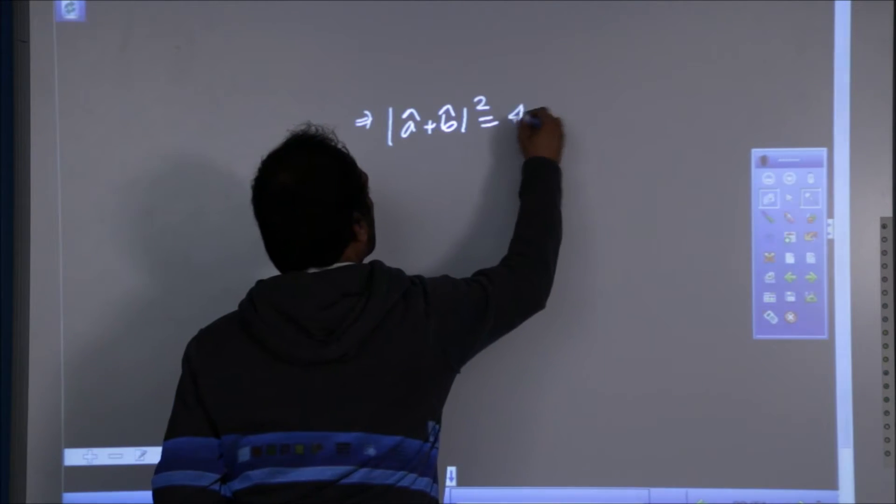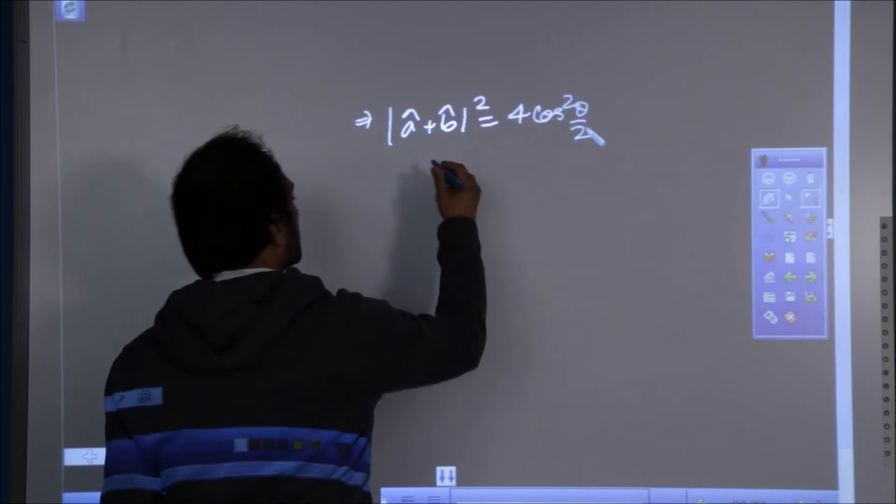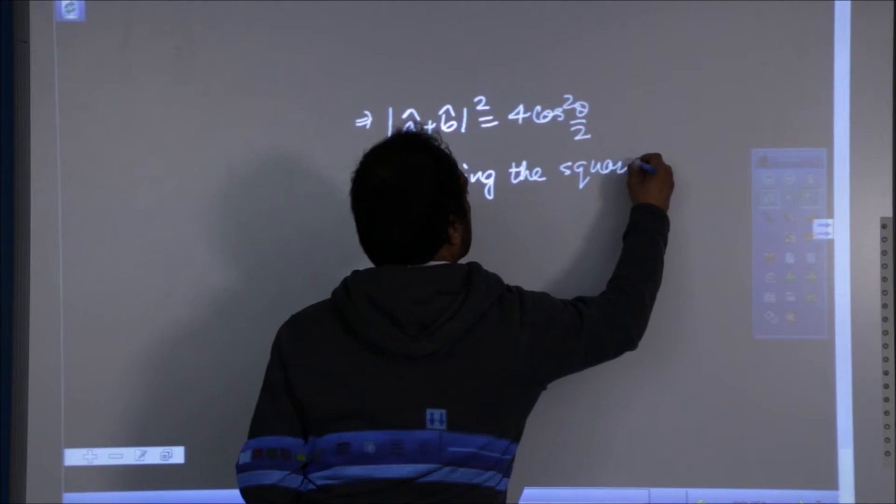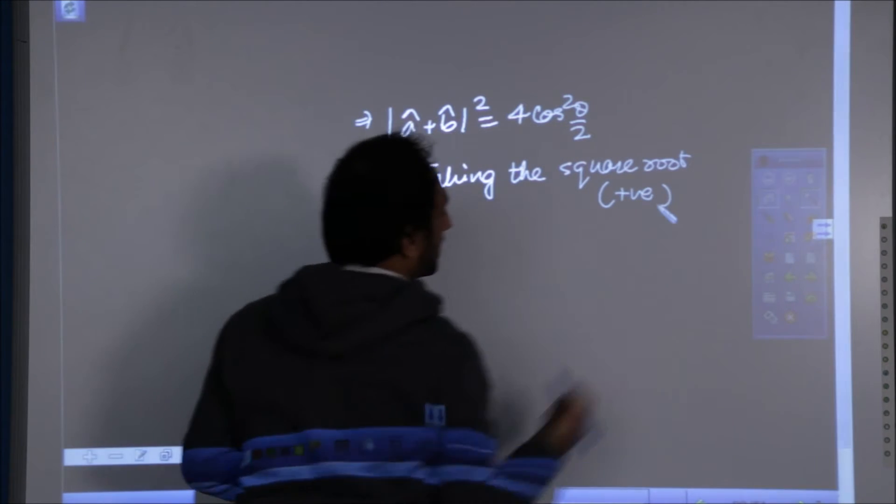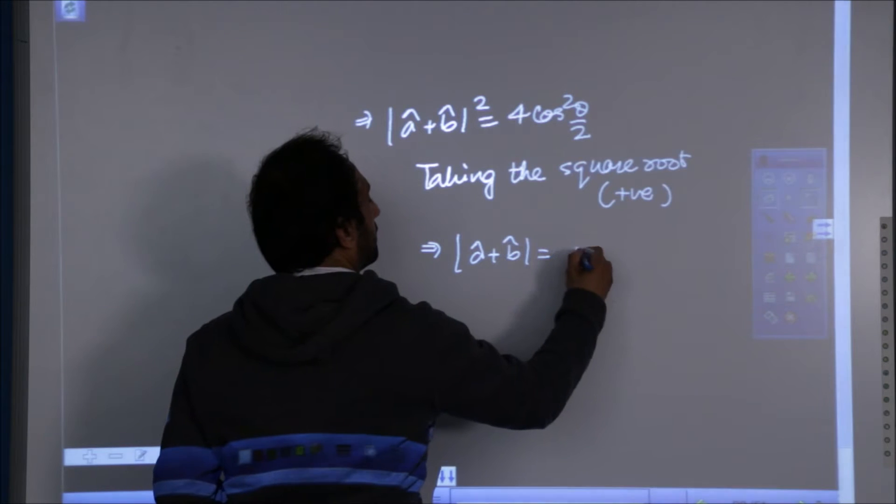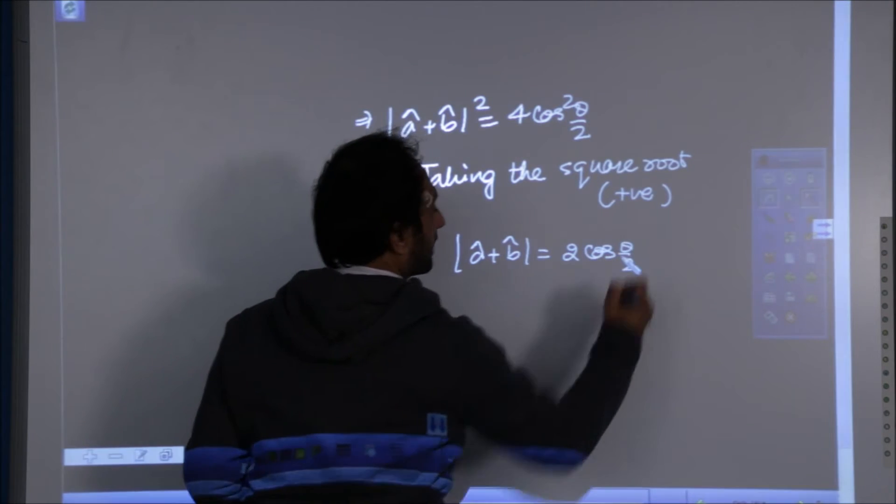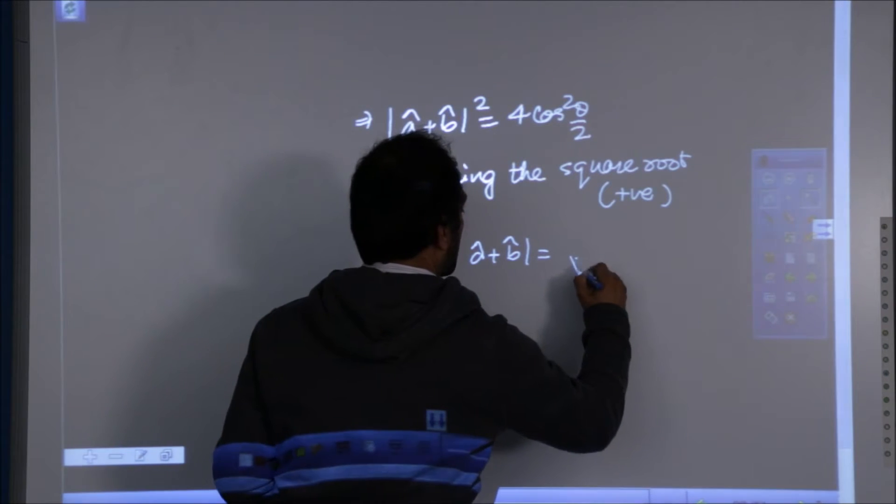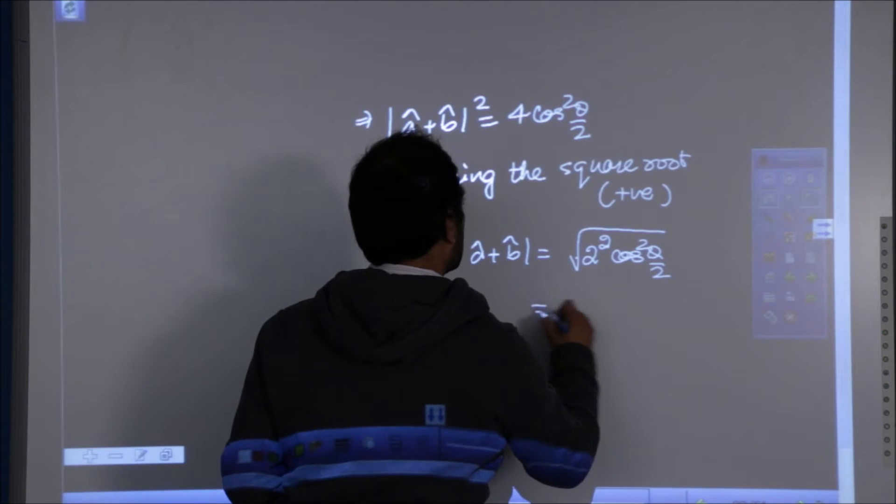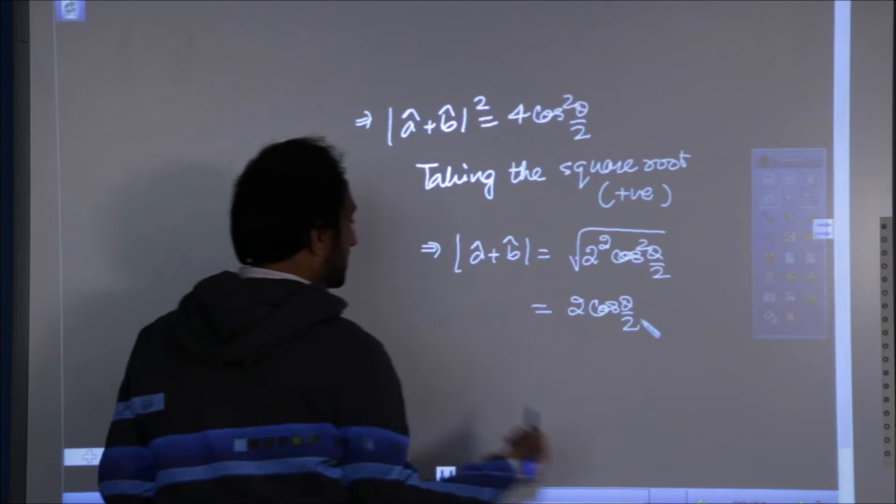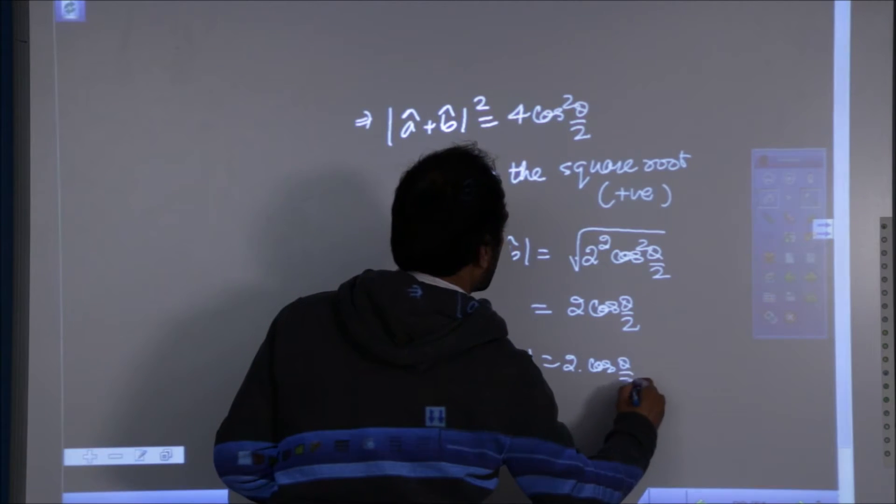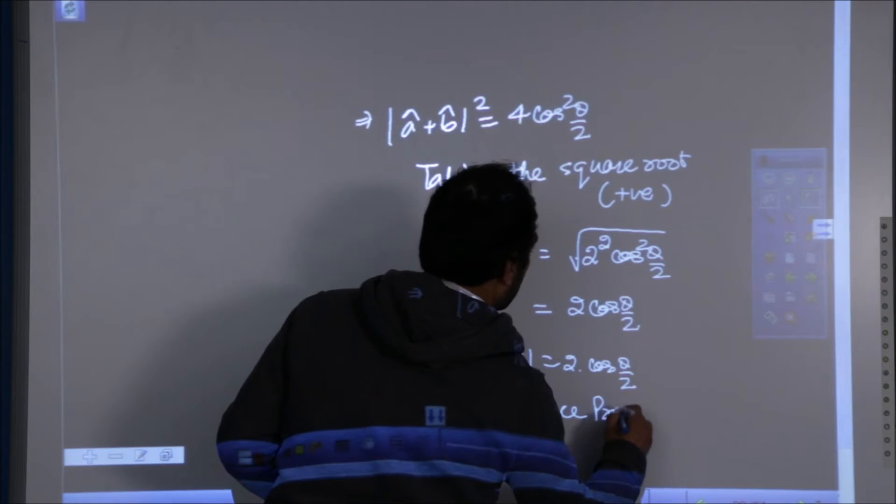So this is now 4 times cos square theta by 2. Now, taking the positive root because it's a magnitude, so it will give only the positive square root. Because it is under root of 4, 4 can be taken as 2 square and this is cos square theta by 2. So, this becomes 2 cos theta by 2 and this was the target that the magnitude of the sum of the two unit vectors is twice cos theta by 2. Hence proved.